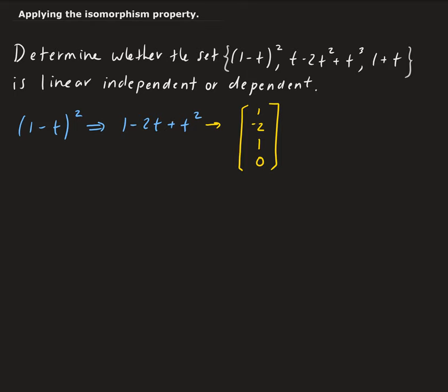So now let's look at the second one. The second one, we have t-2t²+t³. This is going to go into, so we have 0, there is no constant term. So for t we have 1, minus 2, and then 1.